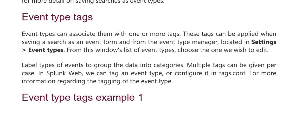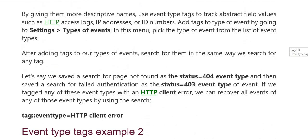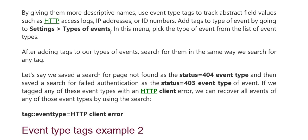Event types example one: use descriptive names and use event type tags to flag field values such as HTTP, access logs, IP addresses, or ID numbers. Add a tag to the event type through the settings event types menu. From the list of event types, add tags, and after defining the event types, search the same way we search for any tag.